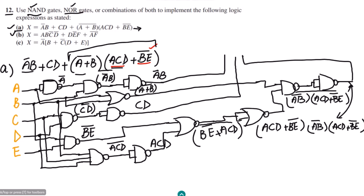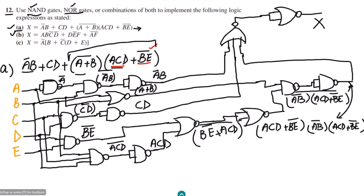Now I have all three terms: A'B, CD, and the third term composed of (A+B)' · (ACD+BE)'. To add these three together, I use a three-input NOR gate, which gives me the complemented sum. To remove that complement, I use another NOR gate with both inputs tied together, and the final output is X — the implemented expression.